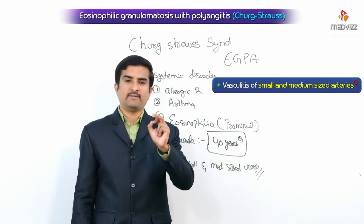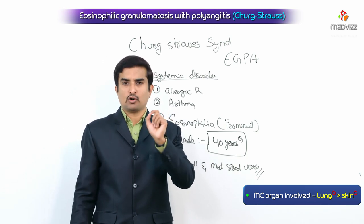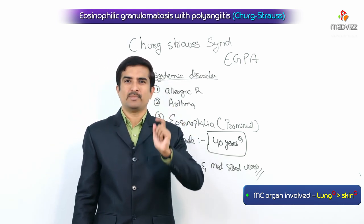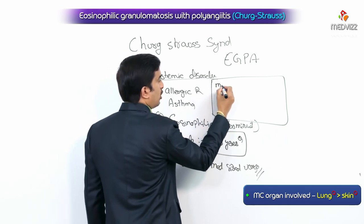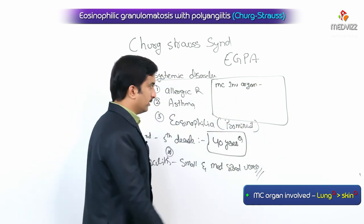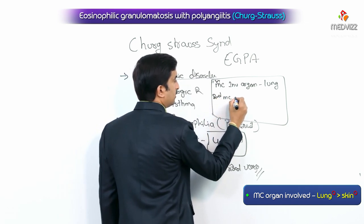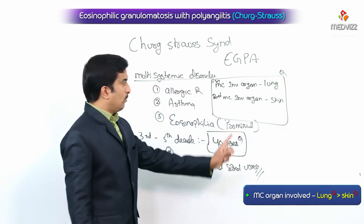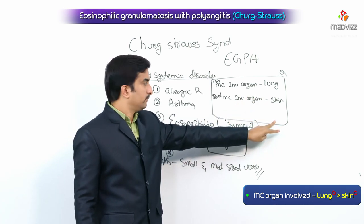Since it is a multisystemic disorder, an important MCQ question is: what is the most commonly involved organ? The most commonly involved organ is the lung. The second most commonly involved organ is the skin.